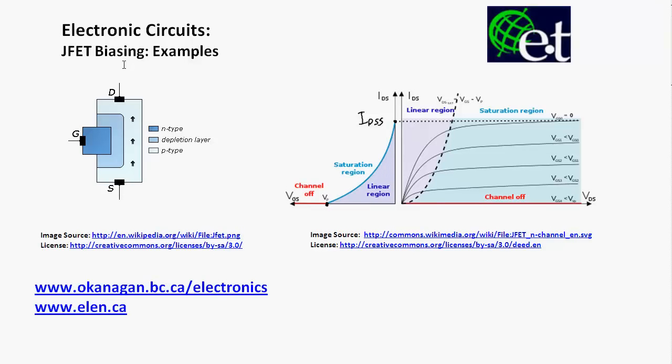I'm carrying on with my JFET biasing description, and I'm going to finish off here with doing a few examples. We'll look at some self-biased circuits like we did previously, and then we'll look at a different type called a voltage divider bias. If you remember from your BJT circuits, we had a voltage divider bias circuit with BJTs — well this is very similar, except instead of having a BJT, we have a JFET.